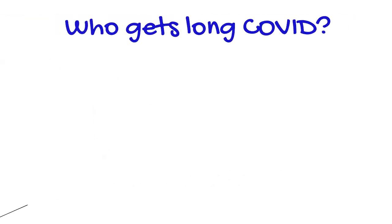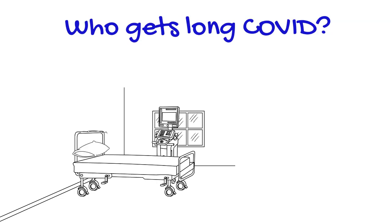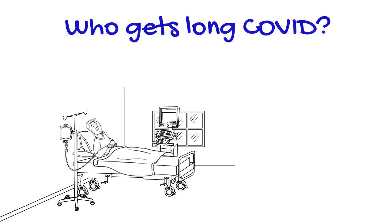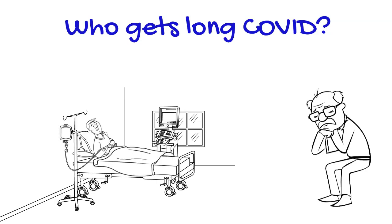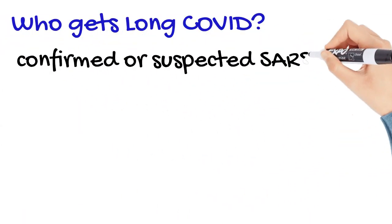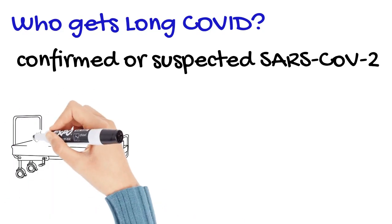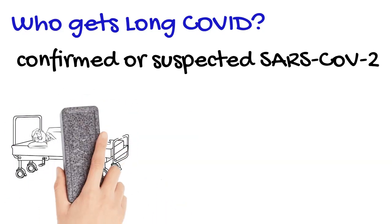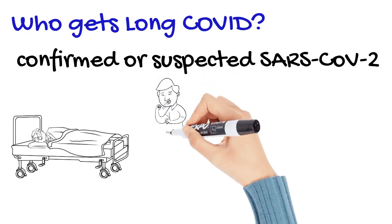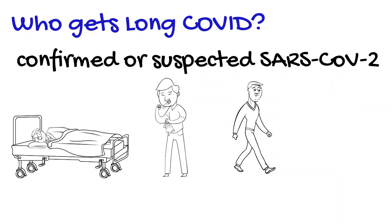So who is at risk? Is it people who had severe COVID when they got infected? Or maybe older people with underlying medical conditions? The answer is no. People who had a confirmed or suspected SARS-CoV-2 infection are at risk of developing lingering symptoms. This includes people who had severe COVID, mild COVID, or even an asymptomatic infection.